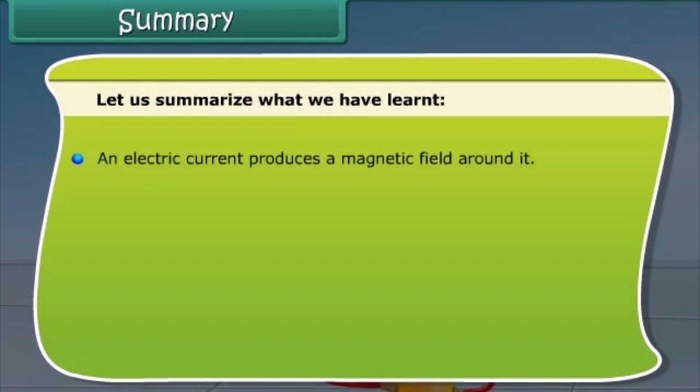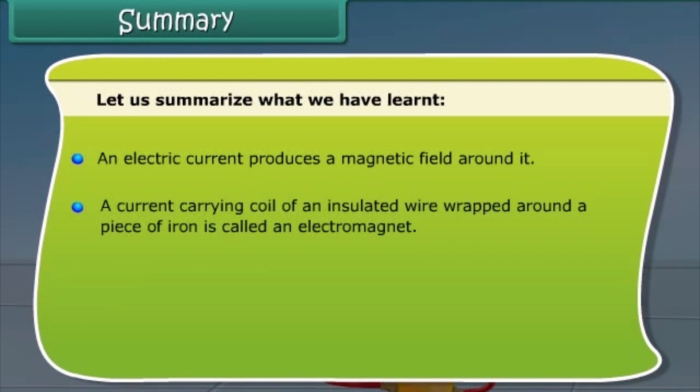A current carrying coil of an insulated wire wrapped around a piece of iron is called an electromagnet. Electric bell functions on the principle of electromagnetic effect.